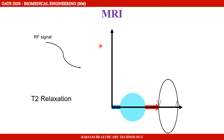Once in MRI we apply an excitation — that is a radio frequency (RF) signal — the protons are flipped to an axis perpendicular to the main axis. Over a particular time, the protons become dephased.